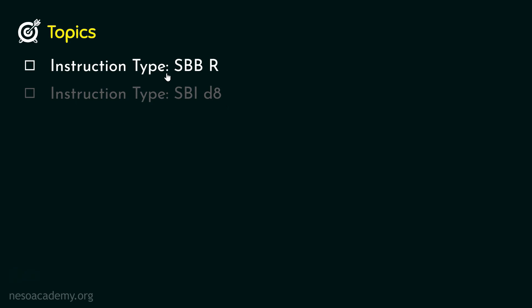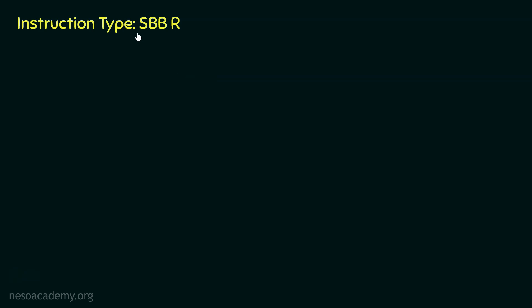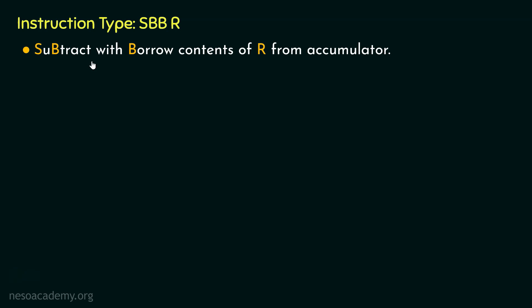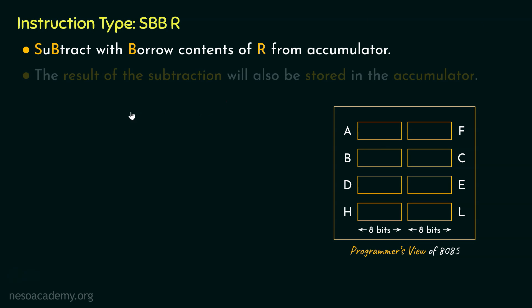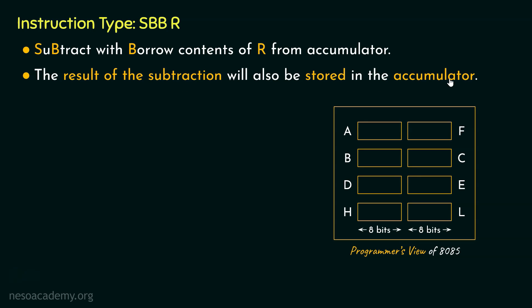Let's begin with the first instruction type SBBR. It stands for subtract with borrow contents of R from accumulator. One of the operands will be inside the accumulator register and the other operand will be in the location specified by R. Once the operation has been performed, the result of the subtraction will also be stored in the accumulator.